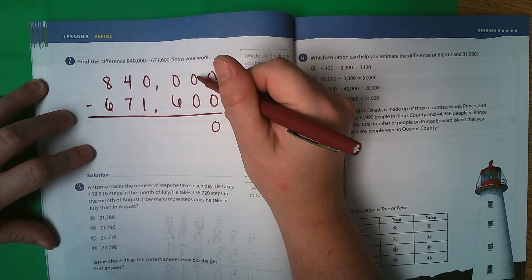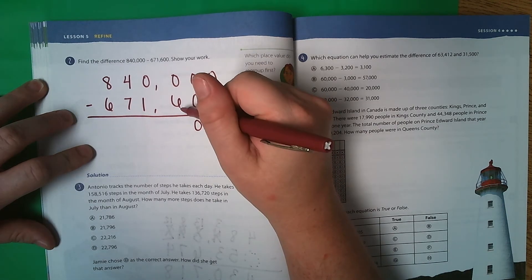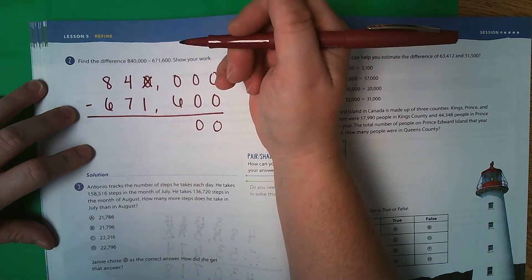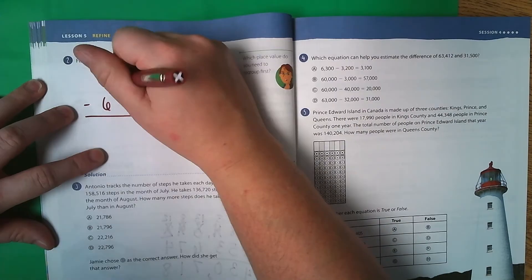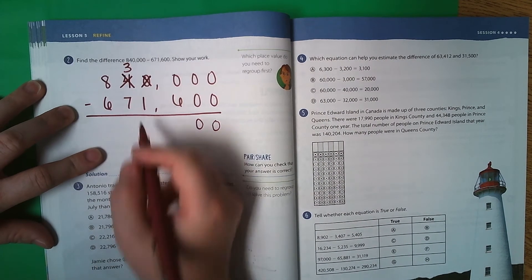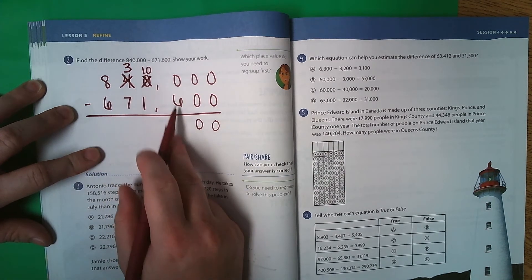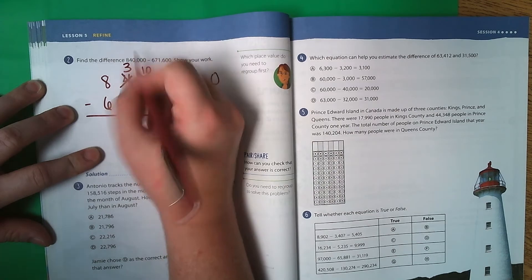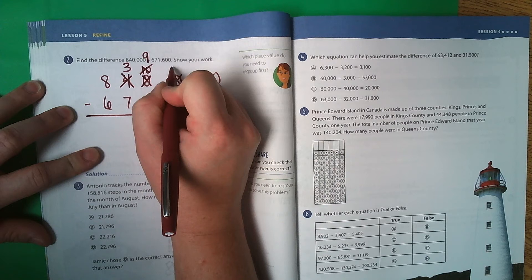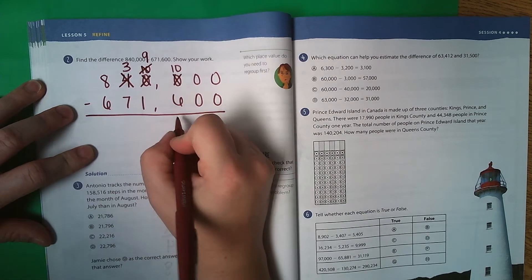In our 1's column, 0 subtract 0 is 0. In our 10's column, 0 subtract 0 is 0. In our 100's column, 0 subtract 6, I can't do that. So I'm going to go over here, but I can't borrow from 0. So I go to the 10,000th place, and that 4 becomes a 3. 0 becomes a 10, but that 10 is not going to help me over here in the 100's column.